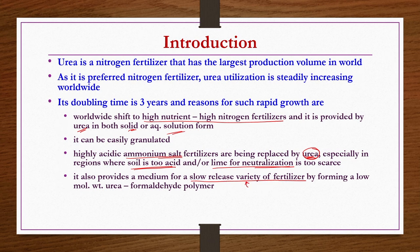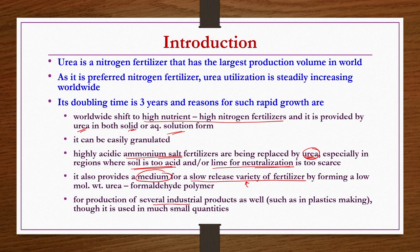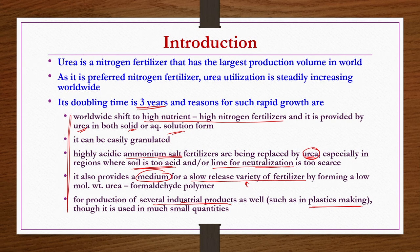Urea also provides a medium for slow-release fertilizer by forming low molecular weight urea-formaldehyde polymers. Some plants require a steady supply of fertilizers over a longer duration, and urea acts as a very good medium for that through these polymers. It is also used for production of several industrial products such as plastics, though in small quantities. Because of these many reasons, demand is increasing, keeping the doubling time under 3 years.